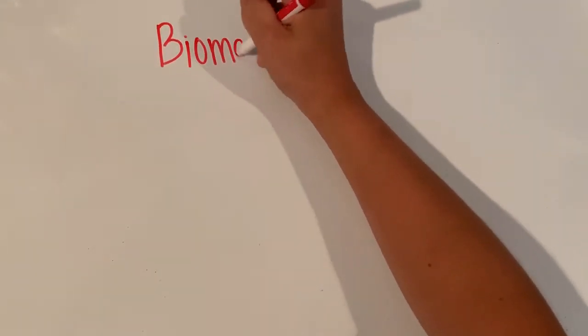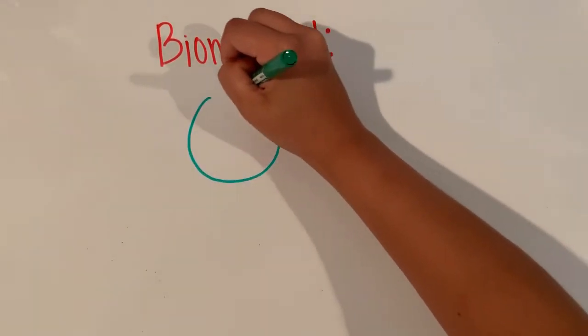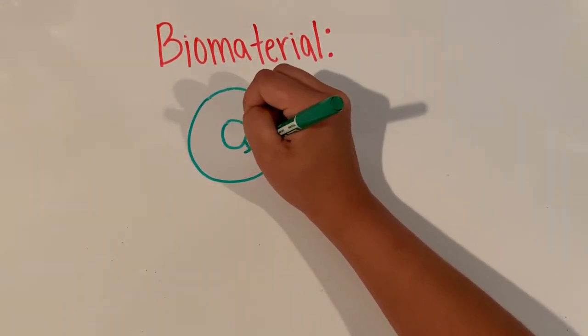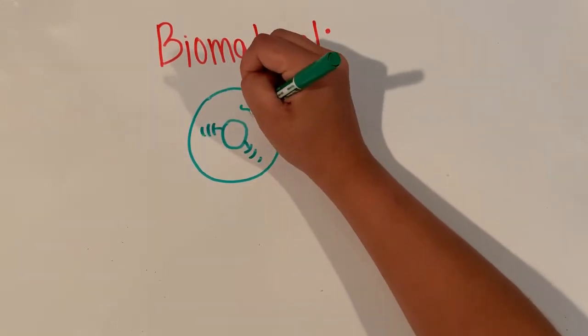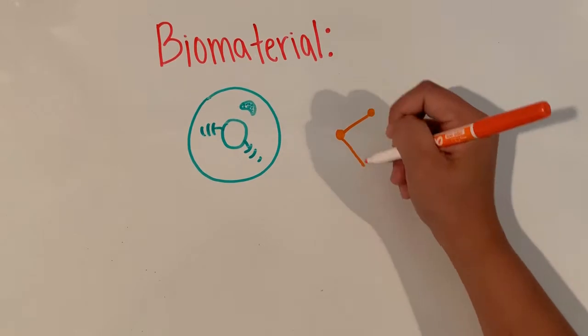The definition of a biomaterial is any matter, surface, or construct that interacts with biological systems. They can be derived from nature or synthesized in the lab using metallic components, polymers, ceramics, or composite materials.